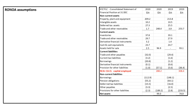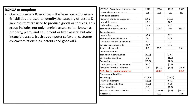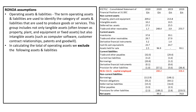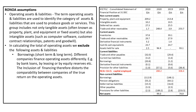The return on net operating assets assumptions: operating assets and liabilities are those used to produce goods or services, including both tangible and intangible assets. In calculating total operating assets, we exclude borrowings — short-term and long-term — because different companies finance operating assets differently. For example, some use bank loans, some leasing, some equity reserves. Including financing distorts comparability between companies of the true return on operating assets, so we leave it out.